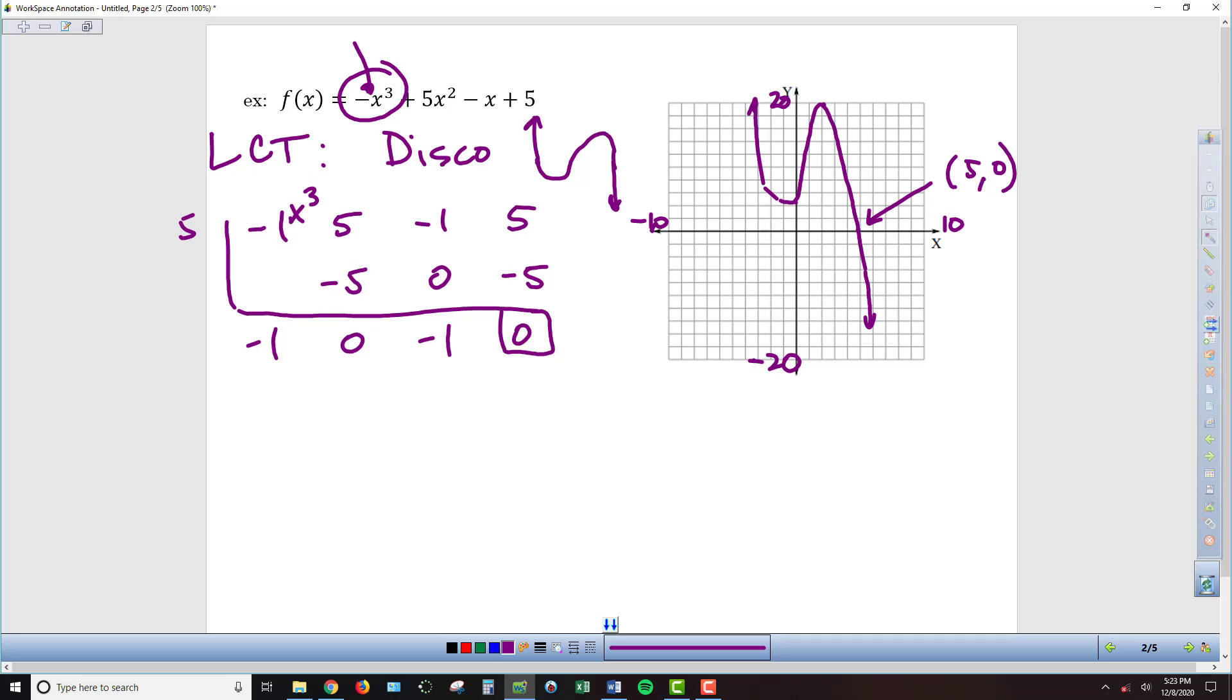We've gone from an x cubed polynomial down to x squared. Now we're ready to write our quadratic that's been left behind and then we can solve. We're going to have negative x squared. There's no x term, and then minus 1 equals 0.